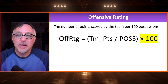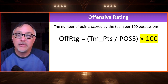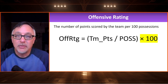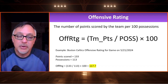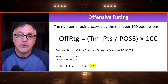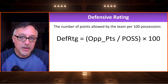The number we look at for offensive rating is the number of points scored for every 100 possessions, for both individual games and season-long averages. Here's a calculation of the Boston Celtics' offensive rating for a game played on 5-21-2024. The Celtics scored 133 points, they had 113 possessions. When we do the division and multiply by 100, we see their offensive rating is 117.7.